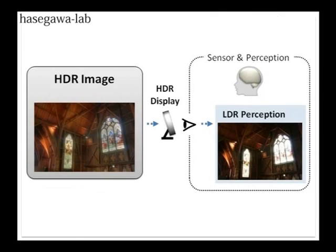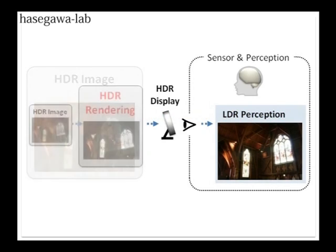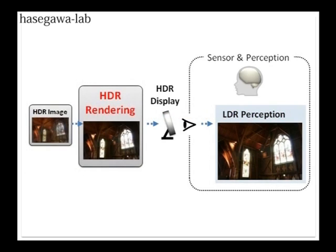High dynamic range rendering for images is a good model to solve this issue. Usually, HDR images require HDR displays to be presented. On the other hand, HDR rendering reduces the dynamic range of HDR images for low dynamic range displays, with regard to human perception for images.